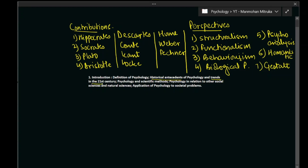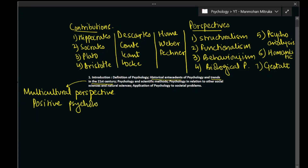Then we are going to look at the trends in psychology in the 21st century. Here we are going to cover topics such as the multicultural perspective — a very interesting and important topic also from the point of view of ethics. We are also going to look at positive psychology, a field that has emerged in just the last 20 to 30 years. Then we will look at evolutionary psychology, and cognitive neuroscience with major focus on cognitive science.